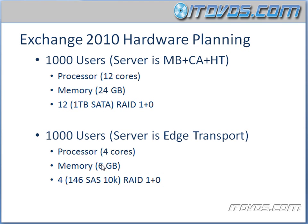Remember, we need some memory for our OS to function as well. About four 146GB SAS 10K drives in a RAID 1+0 configuration should get the job done, giving us about 270 gigs of usable space, which should be fine for our Edge Transport server. The SAS drives come in 10K and 15K — that's the rotational speed. 15K performs a little better than 10K, and SAS drives perform better than SATA drives, but they come in a lower storage capacity, which is perfectly fine for our Edge Transport server.